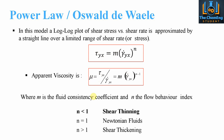m is the fluid consistency coefficient and n is the flow behaviour index. These parameters must be known for your given fluid — they are constants that have been found experimentally. The flow behaviour index gives you an indication, based on the value of n, as to what type of fluid we are actually dealing with.